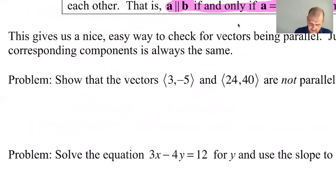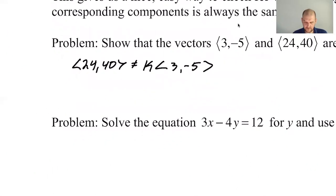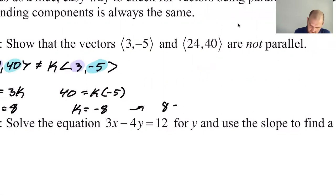If I want to show that two vectors are not parallel, for example, I want to show that the vector <24,40> is not equal to k times the vector <3,-5>. How can I do that? Well, one of the things I typically do is I say 24 equals 3k from the first components, the x components. That would mean that k has to equal 8. But then if I look at the other component, the y component, 40 has to equal k times negative 5, so k would have to equal negative 8.